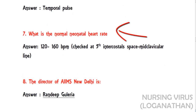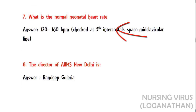The seventh question: what is the normal neonatal heart rate? The answer is 120 to 160 beats per minute, commonly checked at the fifth intercostal space, mid-clavicular line.